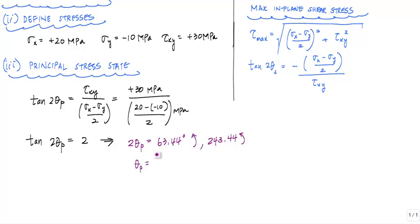The angles actually associated with the principal stress, we've got to divide these numbers by 2, theta p, the two possible answers are 31.72 degrees and 121.72 degrees, both going counterclockwise. So these are the angles associated with my principal stresses.